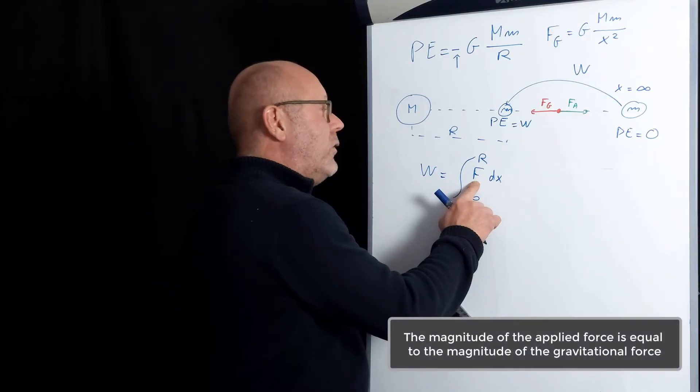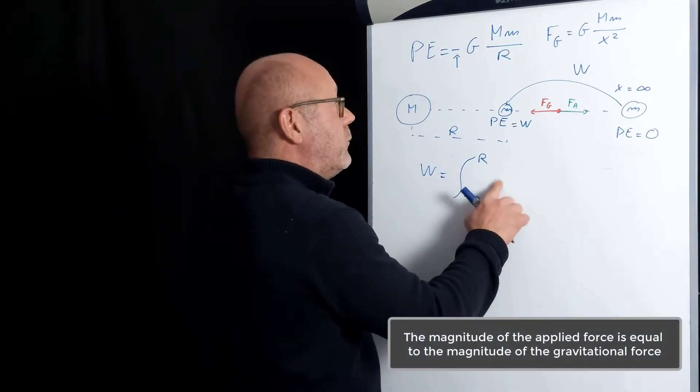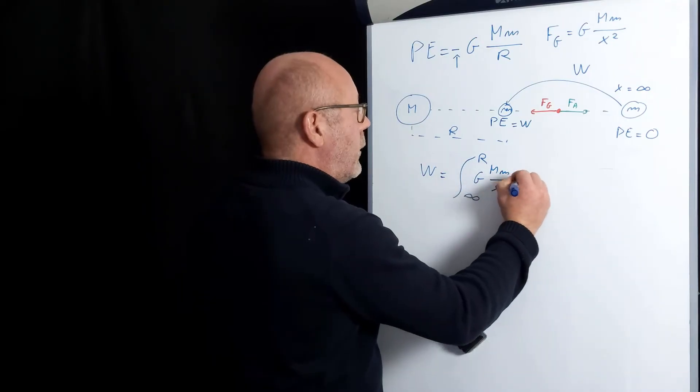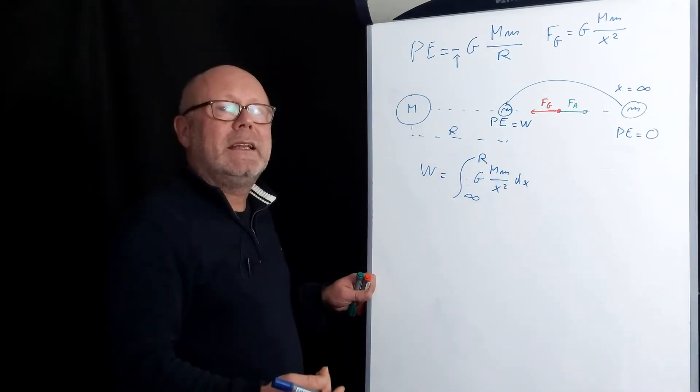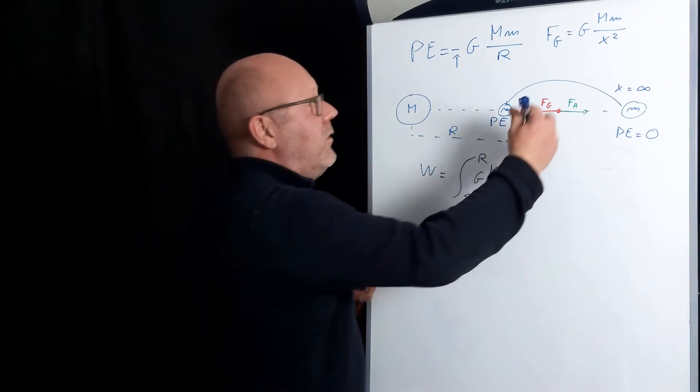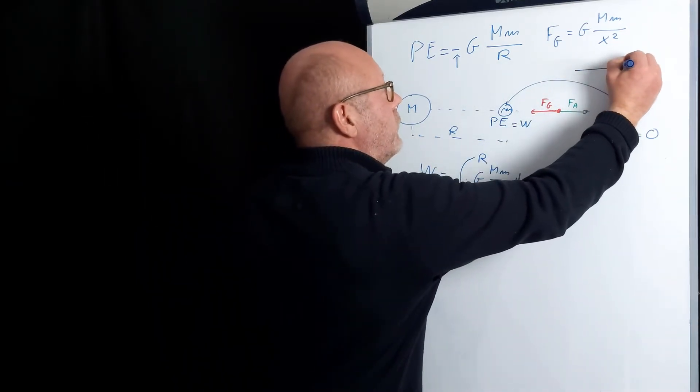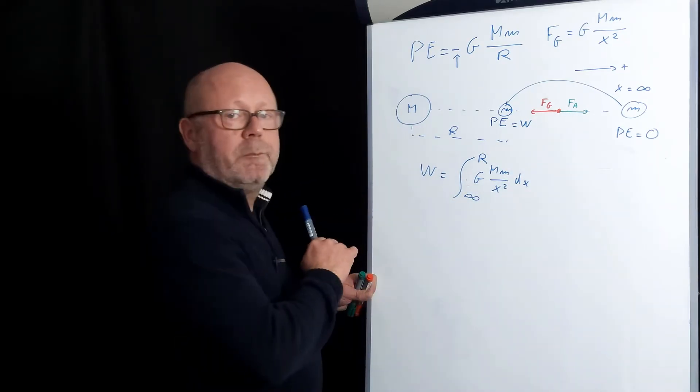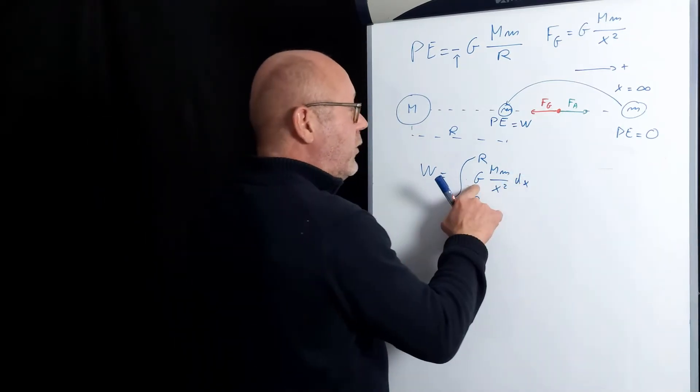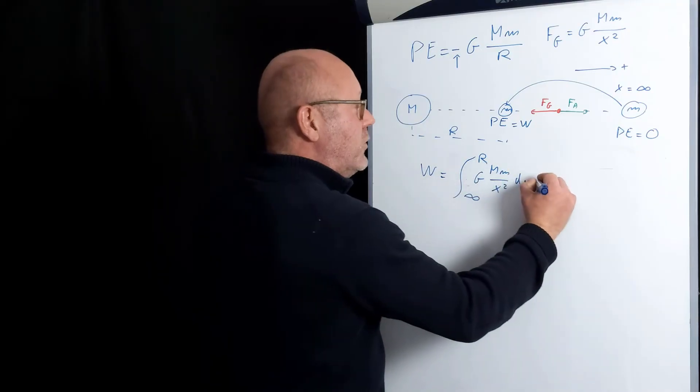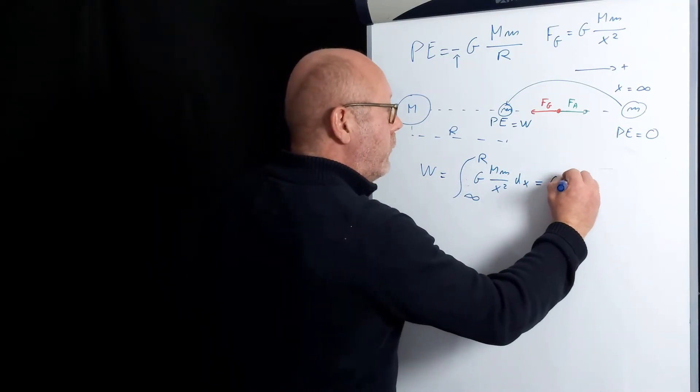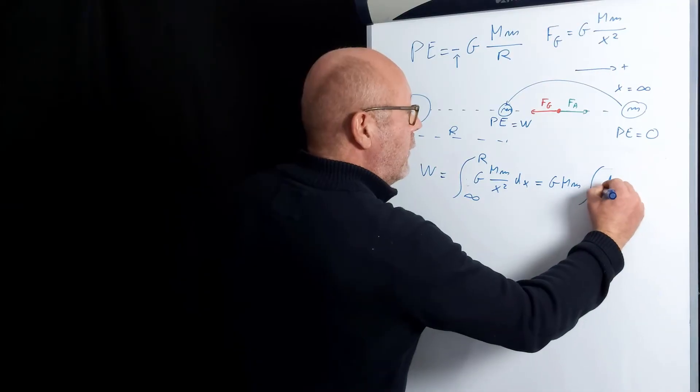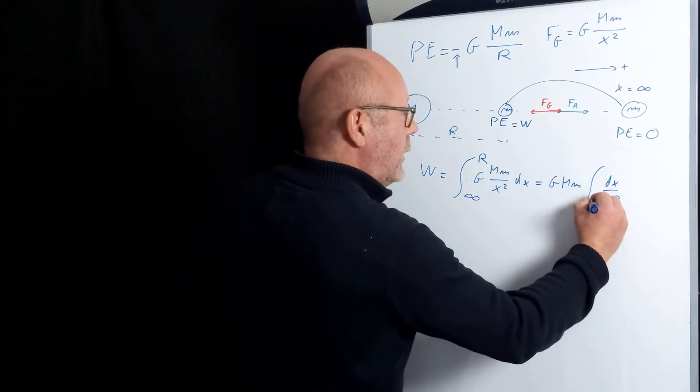This applied force is a gravitational force, so I can write it here. I already chose a positive direction for my axis towards the right. So the applied force that I'm placing here will be positive. G, big M and little m are constants, so I can remove them from the integral. And I end up integrating 1 over x squared between infinity and r.